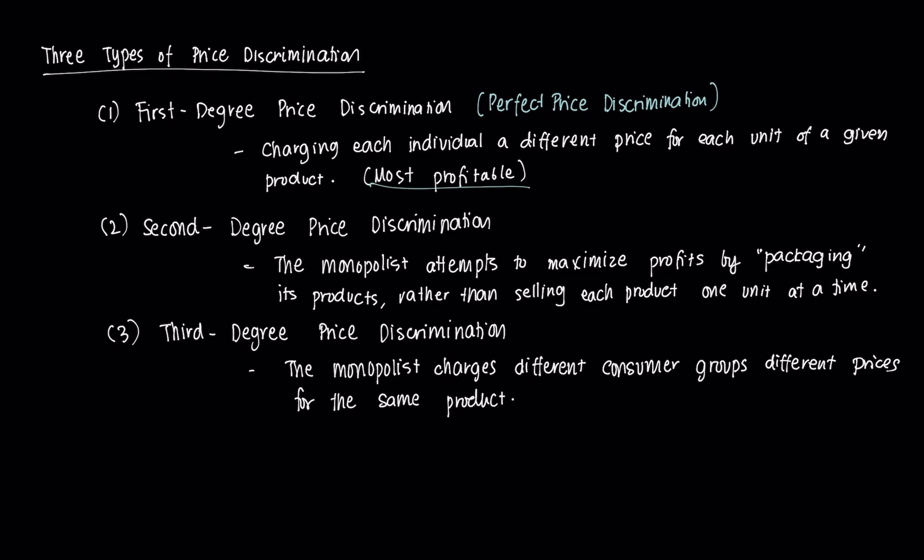You may ask, how does a monopolist achieve that? Or what are the things the monopolist must have in order to engage in price discrimination? Apart from it being legal, of course, because not all forms of price discrimination are, strictly speaking, legal.